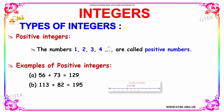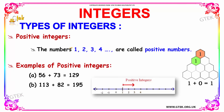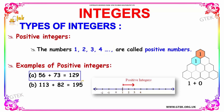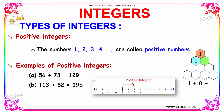Next we are going to see the next type of integer, which is the positive integer. The numbers one, two, three, and four are said to be positive integers because they have positive signs in front of them and they are greater than zero. Some examples for positive integers: fifty-six plus seventy-three will give you one hundred and twenty-nine; one hundred and thirteen plus eighty-two will give you one hundred and ninety-five. Since we are adding positive integers, we get a positive integer as a result.